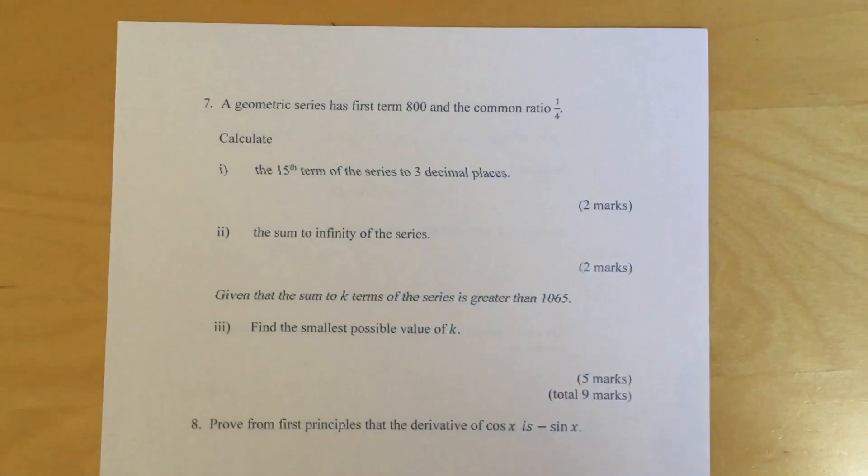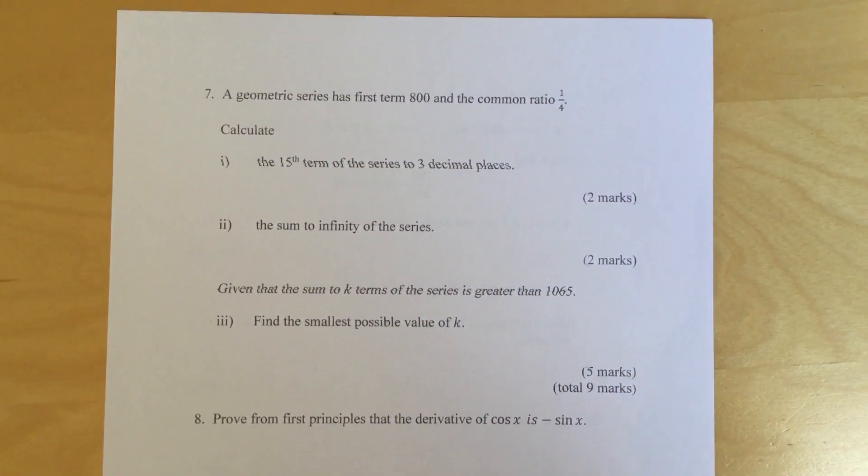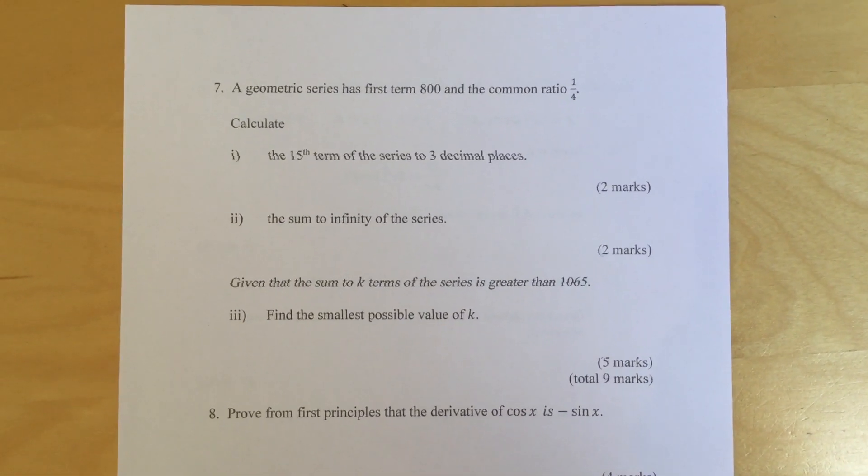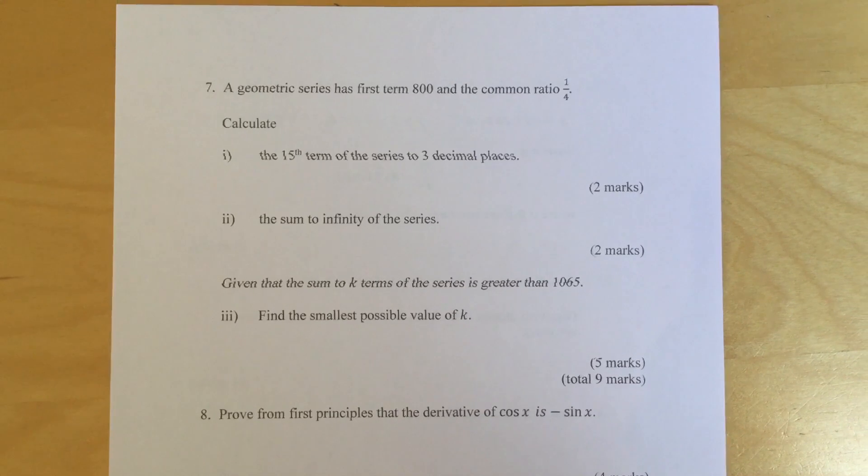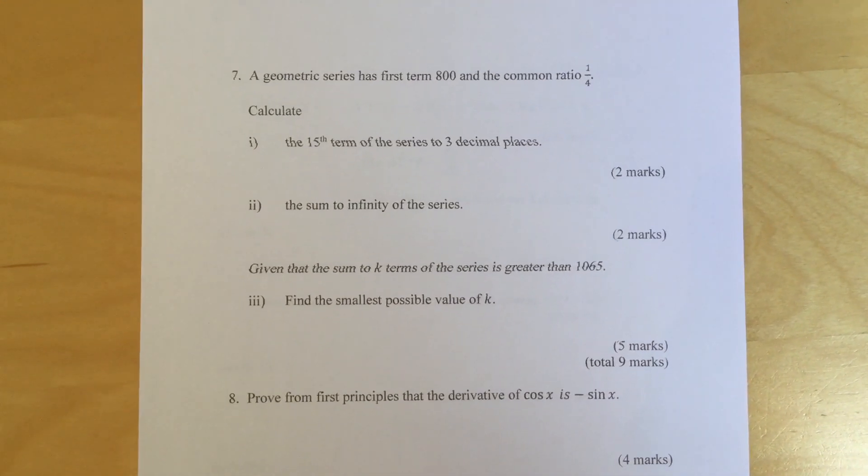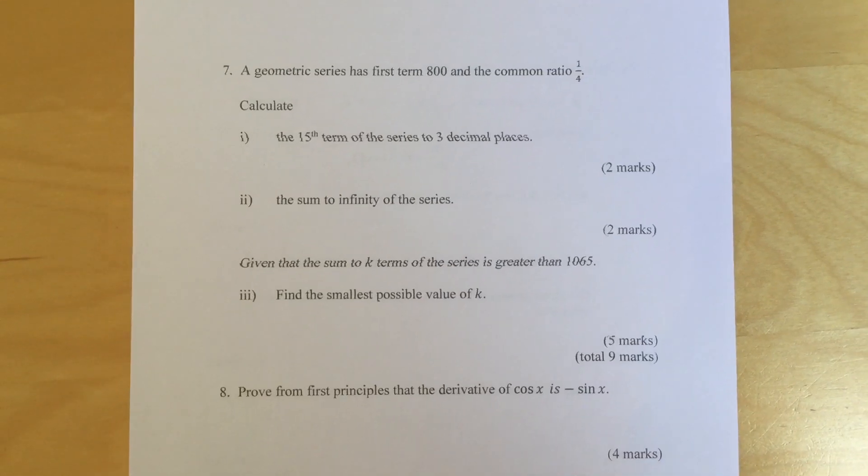Question 7: A geometric series has first term 800 and the common ratio of 1 over 4. Calculate part 1: The 15th term of the series to 3 decimal places. Part 2: The sum to infinity of the series.